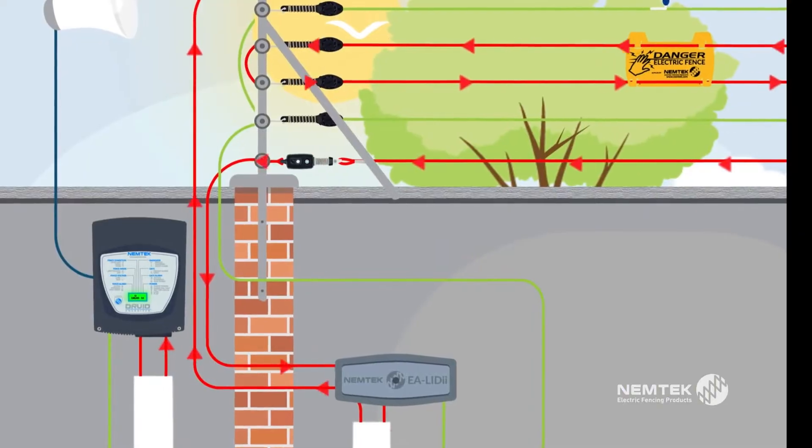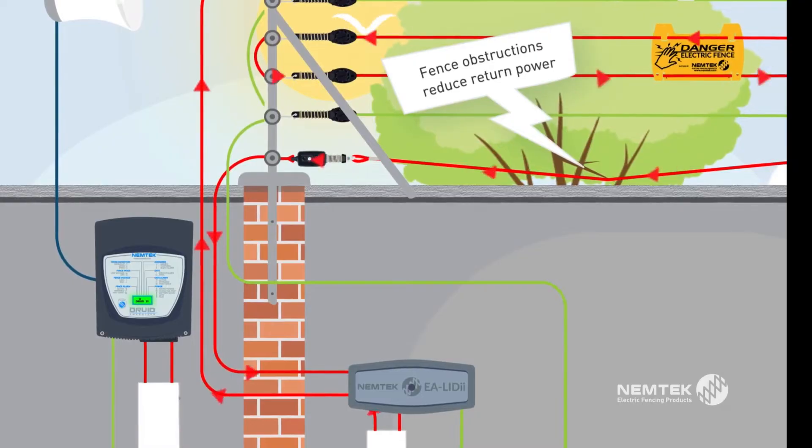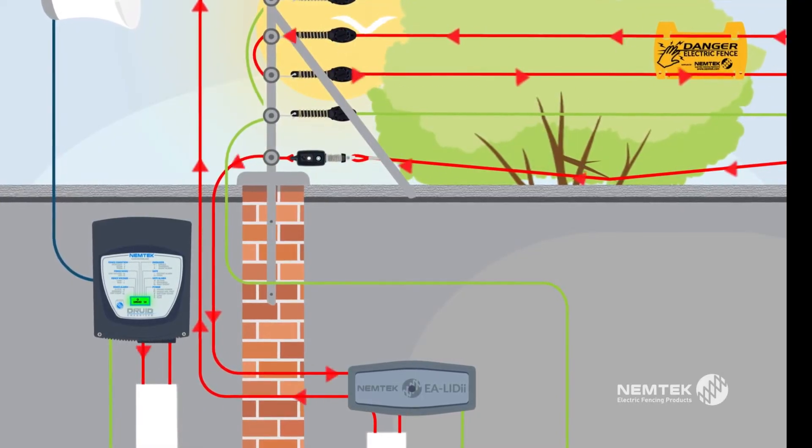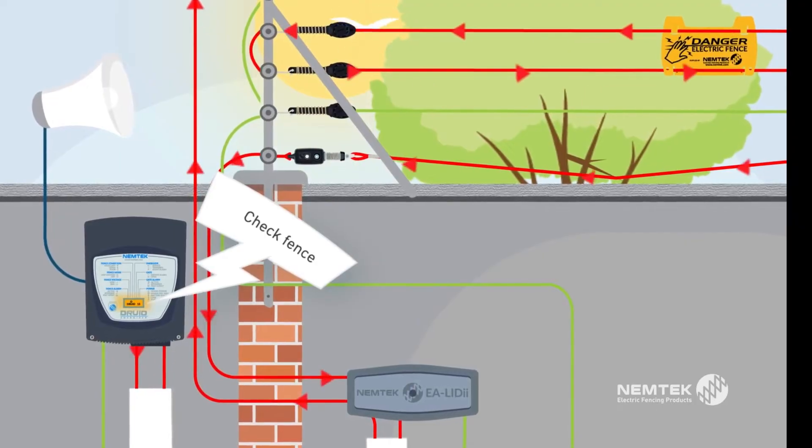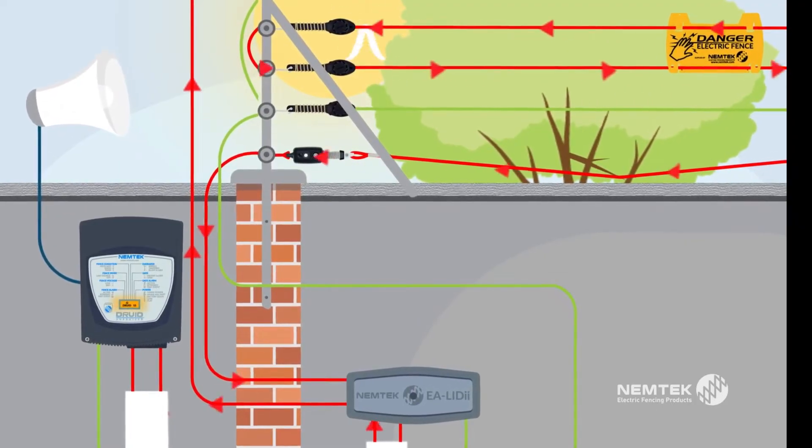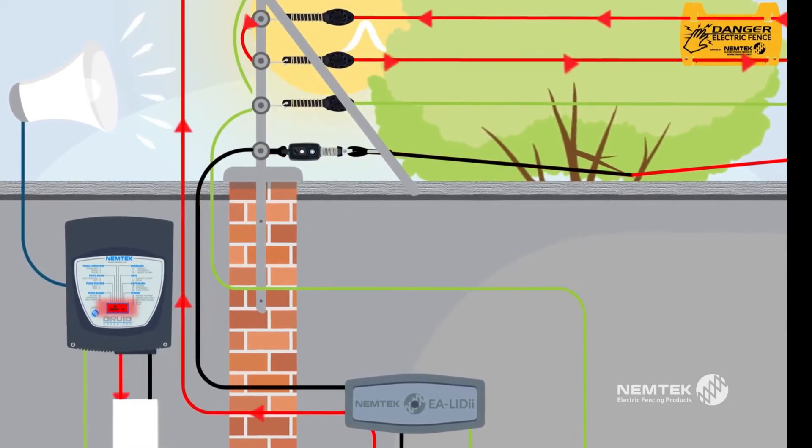If the high voltage pulse is interrupted along the fence by an object like a tree branch, there is substantial loss. The energizer display will change to orange, which indicates you should check the fence and remove any obstructions. During wet weather, this interruption will get worse and may cause the energizer to go into alarm.